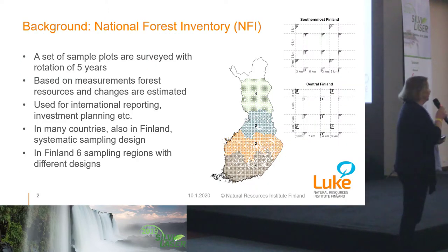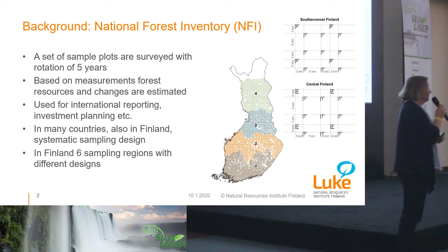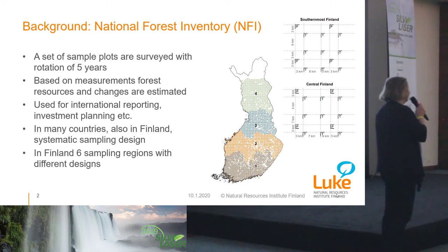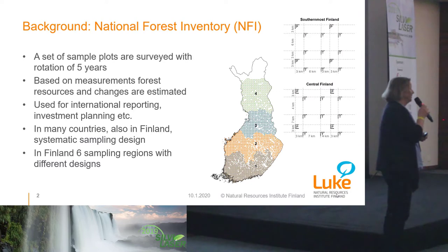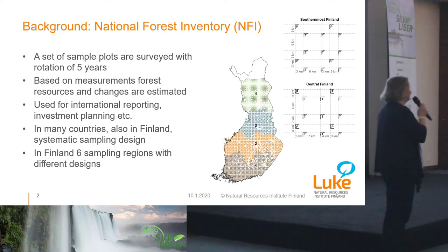Just a short review of what the national forest inventory is like in Finland and in many other countries. The design is systematic. The sample plots are organized in clusters. The sample plot to sample plot distance is around 200 to 400 meters, and from one cluster to another the distance is from 3 to 8 kilometers, depending on the sampling region. The design can vary within the country in respect to density, and the entire country is covered with the systematic design, in Finland excluding the most northern part where there is hardly any productive forest.